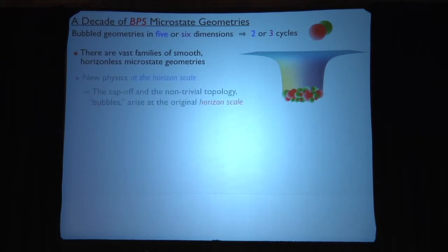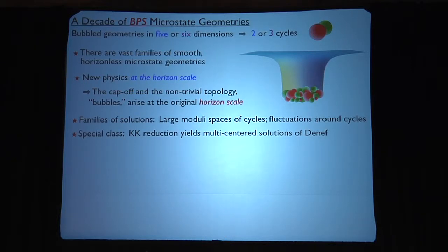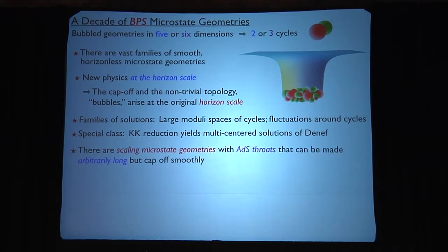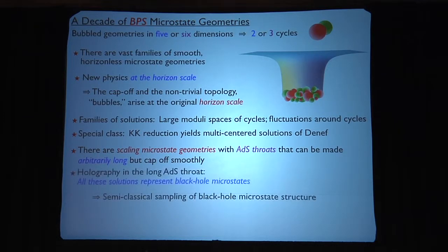Okay, so there's been a decade of working on this. We've been doing this for BPS for many, many years. We have vast families of examples. They're supported in five and six dimensions on two and three cycles. There's new physics at the horizon scale, because this capping off occurs at the scale, or the radius, or the area of the horizon, or where it would be. We've got lots of family solutions, large modulized spaces, fluctuations around the cycles. But more importantly, we have these in the BPS regime, scaling microstate geometries. They have very long AdS throats, and you can do holographic field theory. And in particular, the holography and the long AdS throat tells you that these solutions correspond to the black hole microstates. And so, you're getting a semi-classical sampling of the black hole microstate structure. And so, these things I call topological stars probably should be interpreted as coherent microstates of a black hole.